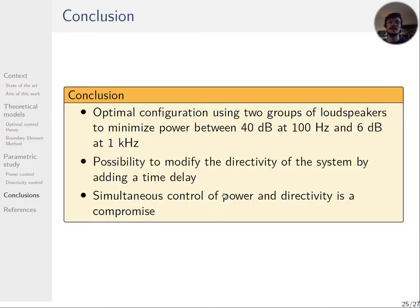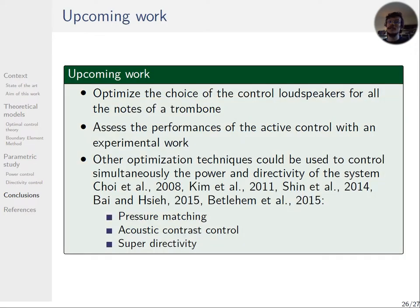So to conclude, an optimal configuration for our case uses two groups of loudspeakers, a ring around the bell and a loudspeaker in front of the bell. Each group of loudspeakers needs to be tuned to deliver the optimal volume velocity, the first group being used for low frequency and the second for higher frequencies. It has been shown that adding a time delay changes the directivity of the system but reduces the power attenuation. A compromise has thus to be done between power and directivity control. In parallel, this study showed that the use of a BEM model is not necessary to estimate the power attenuation, the effect of diffraction being negligible in the frequency range of the study. Then it will be necessary to optimize the choice of control loudspeakers for all the notes of a trombone and not only the Bb notes. An experiment can be done to evaluate and compare the results of an active control with these simulations. And finally, other formalisms can be used to achieve a better compromise between power and directivity control. Thank you.